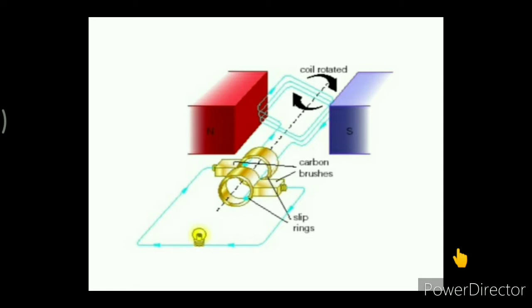The induced current does not flow unless the generator is electrically connected to an external circuit with an electrical load, such as a light bulb. Slip rings are used here. The slip rings allow the transfer of the alternating EMF induced in the rotating coil to the external circuit. Each ring is connected to one end of the coil wire and is electrically connected to the external circuit via conductive carbon brushes.